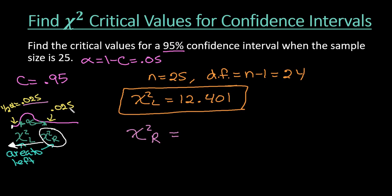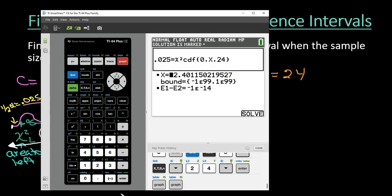So if I do that, I can either do 1 minus 0.025 or I can take the 0.025 and add it to the 95. Either way, I get an area to the left of 0.975. So we're going to go back into our calculator.